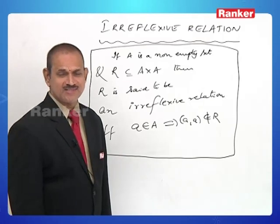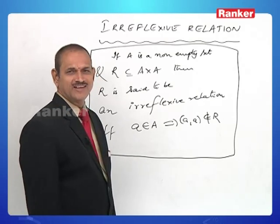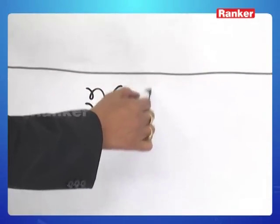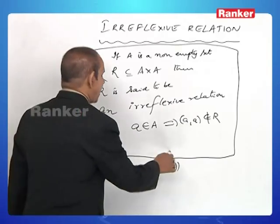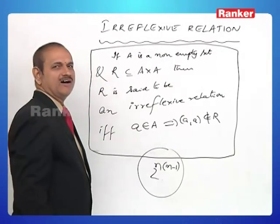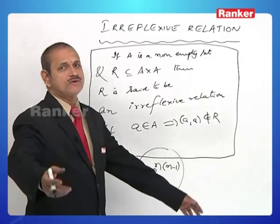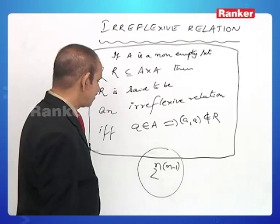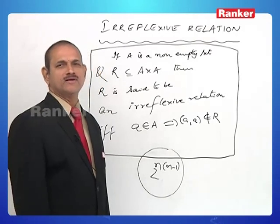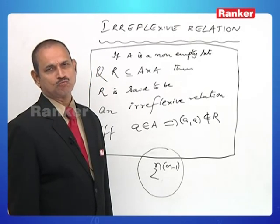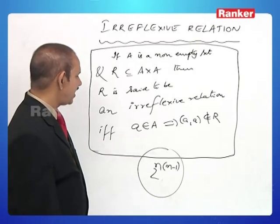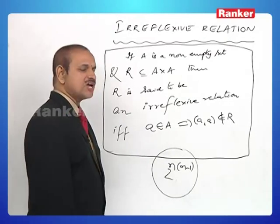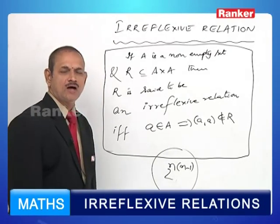There is also a formula for this. The number of reflexive relations on a set A is 2^(n(n-1)). The same formula is used for the number of irreflexive relations as well — 2^(n(n-1)). The formula for the number of irreflexive relations and reflexive relations is the same.